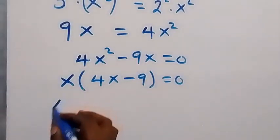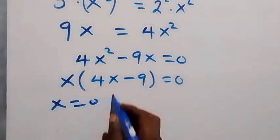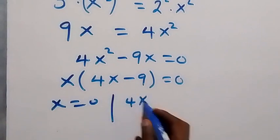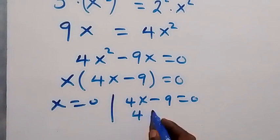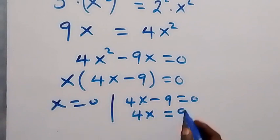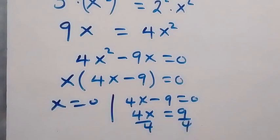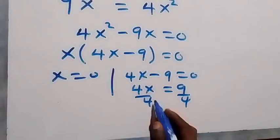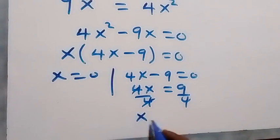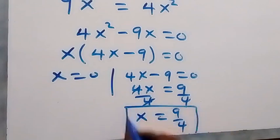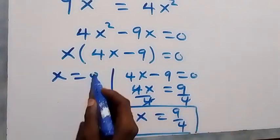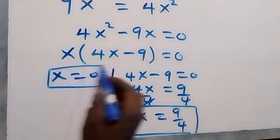We factor x out, giving x times (4x minus 9) equals 0. From here we have x equals 0, or 4x minus 9 equals 0, which gives 4x equals 9. Dividing both sides by 4, we get x equals 9 over 4.